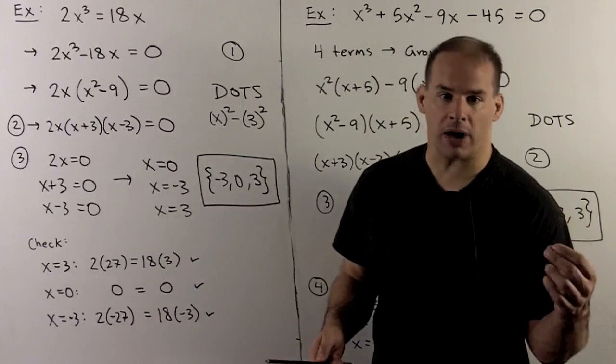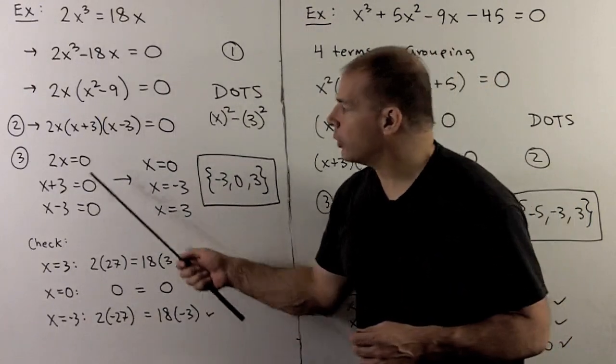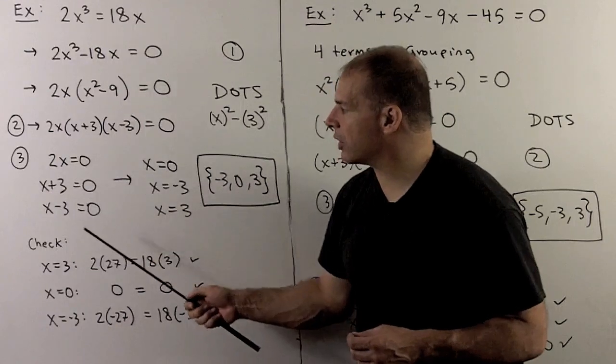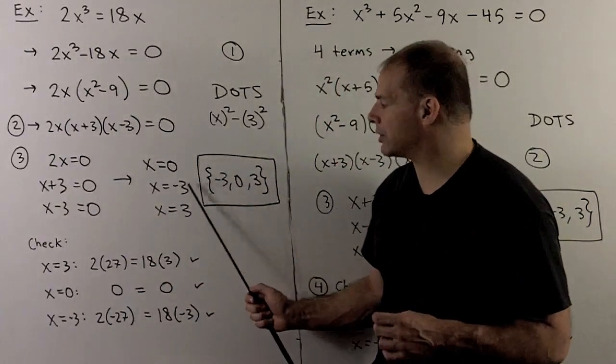We use the zero product rule. So I set each factor equal to zero and solve. We have 2x equals zero, x plus 3 is zero, x minus 3 is zero. That gives solutions zero, minus 3, and 3.